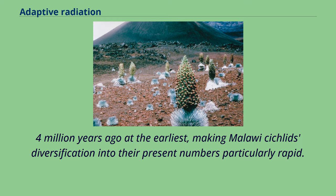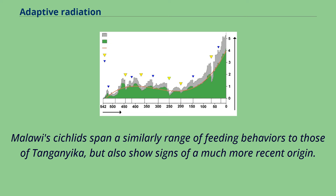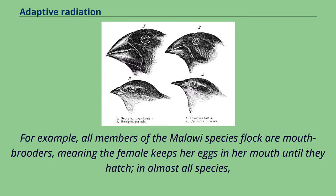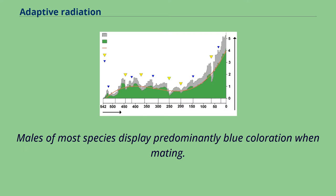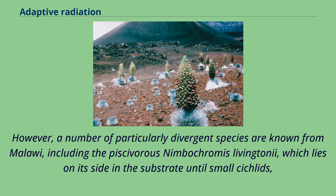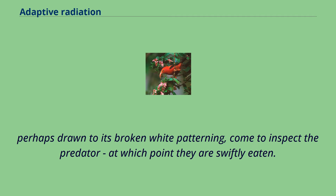Malawi cichlids span a similarly wide range of feeding behaviors to those of Tanganyika, but also show signs of a much more recent origin. For example, all members of the Malawi species flock are mouth brooders, meaning the female keeps her eggs in her mouth until they hatch, in almost all species. The eggs are also fertilized in the female's mouth, and in a few species, the females continue to guard their fry in their mouth after they hatch. Males of most species display predominantly blue coloration when mating. However, a number of particularly divergent species are known from Malawi, including the piscivorous Nimbochromis livingstonii, which lies on its side in the substrate until small cichlids — perhaps drawn to its broken white patterning — come to inspect the predator, at which point they are swiftly eaten.